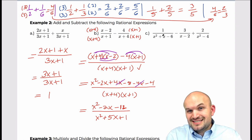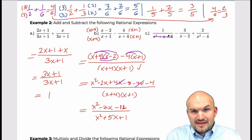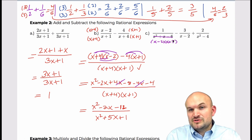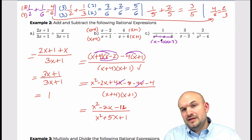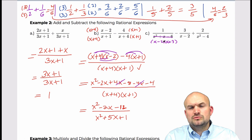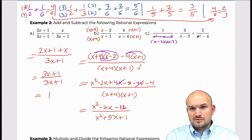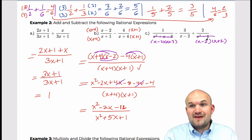What two numbers multiply to give negative six and add to give positive one? That factors down into x minus two times x plus three. And then the other denominator factors down into x minus two times x plus two.